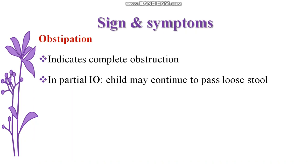The next manifestation is obstipation. The child even doesn't pass flatus, and that indicates complete obstruction. However, if it is a partial obstruction, the child may continue to pass some amount of stool. Obstipation indicates complete obstruction where the child even doesn't pass flatus, while in partial obstruction, the child can pass some amount of stool.